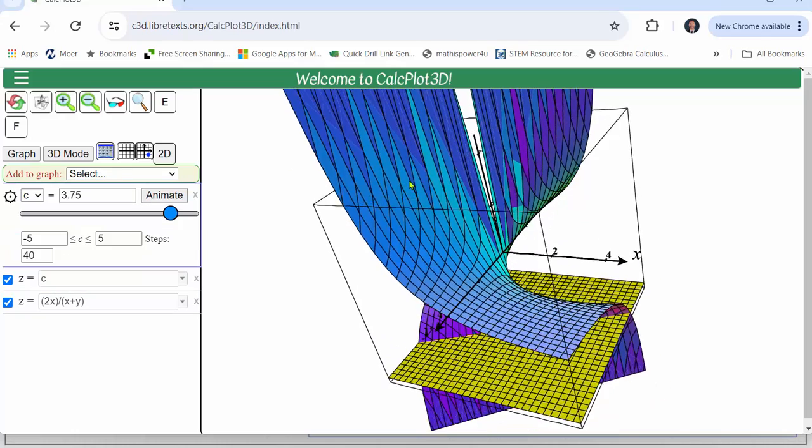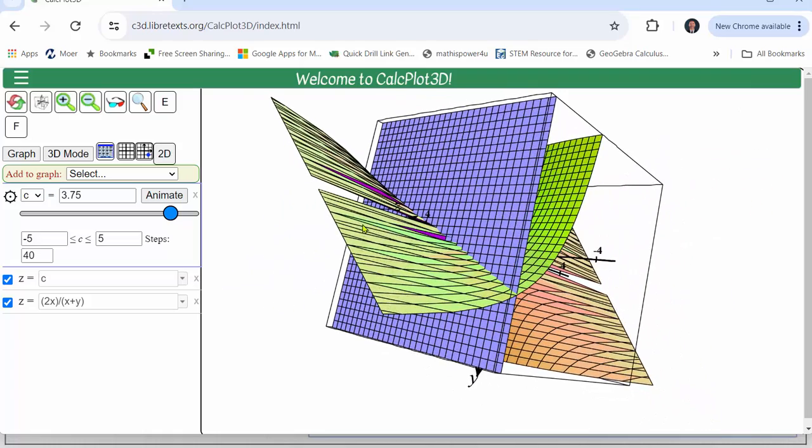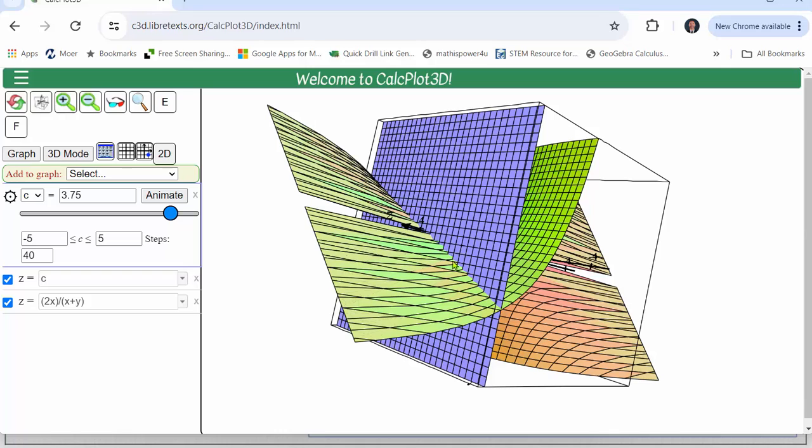If we angle this correctly, we can see the intersection of that plane and the surface looks linear. Also notice there is some discontinuity in the function, which we'll discuss in a moment.